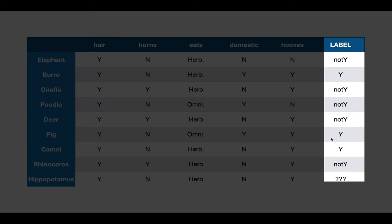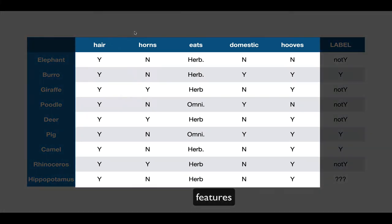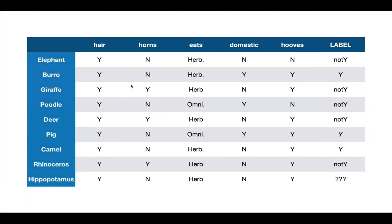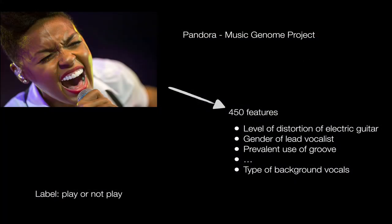Something we want to predict, something we want to classify, and we have a number of columns representing features. Each row in this table represents a particular instance. There's relatively few features here, one two three four or five features. But as problems get more complex we end up getting more features per item. In Pandora, they have this Music Genome Project with 450 features for each song. Features like the level of distortion of electric guitar, gender of the lead vocalist, does it have groove, type of background vocals. They hire professional musicians to hand label music and the label is for your station whether we should play it or not.